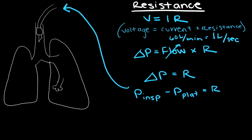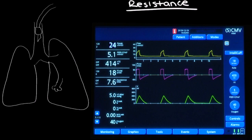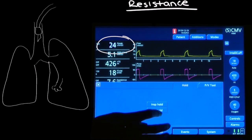The peak pressure is the highest pressure that the respiratory system sees. The plateau pressure is what was not lost to resistance and is left over at the end of inspiration when flow is zero. So how do we find out what the peak and plateau pressures are? Take a look at the vent screen here for your patient who is in volume control. We can see the peak pressure here, and to calculate the plateau pressure, we do an inspiratory hold.